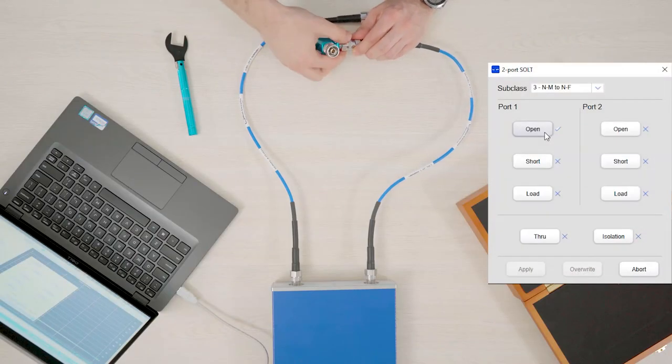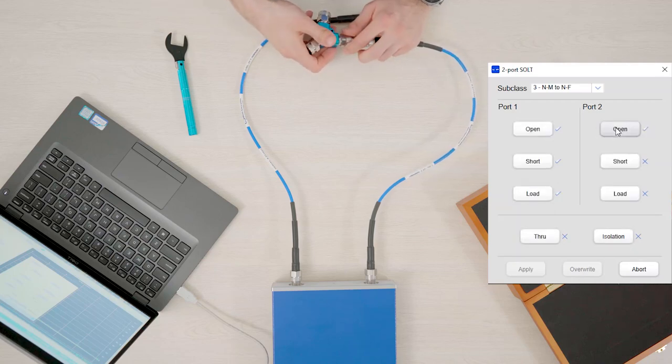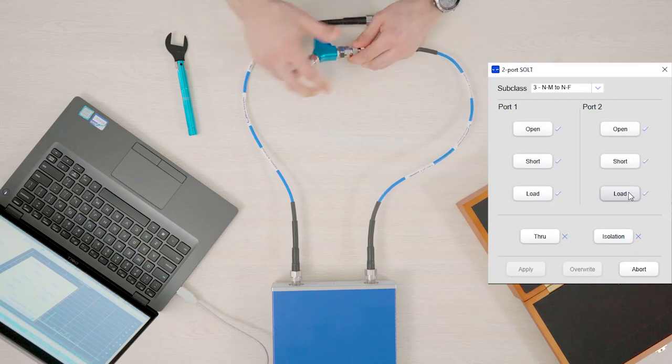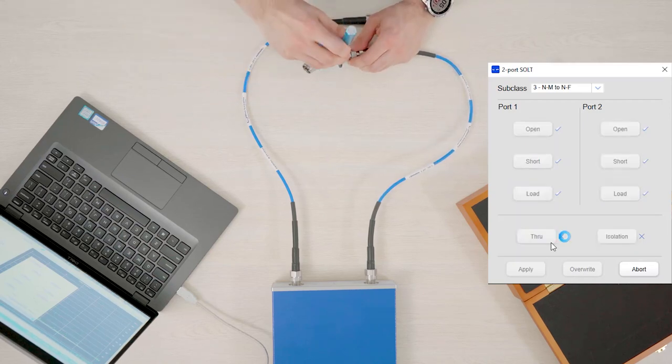One by one, connect the appropriate calibration standard to the measurement ports of the EVNA and click the corresponding button to make the measurement. We do this for the open, short, and load on both ports, as well as a through measurement.